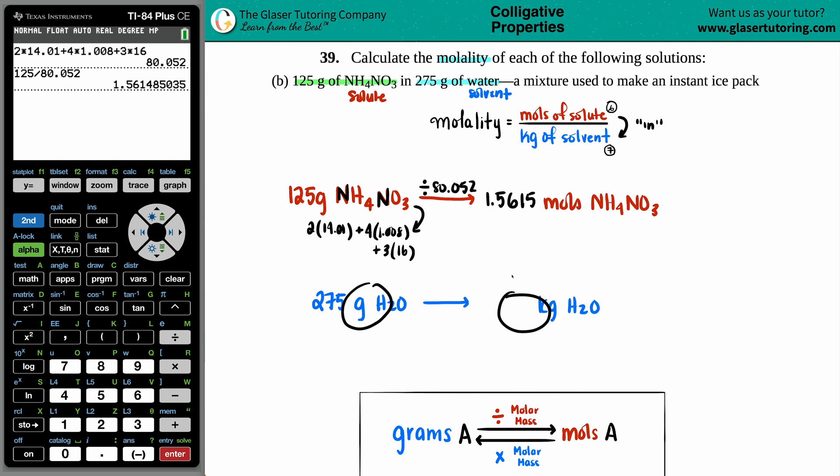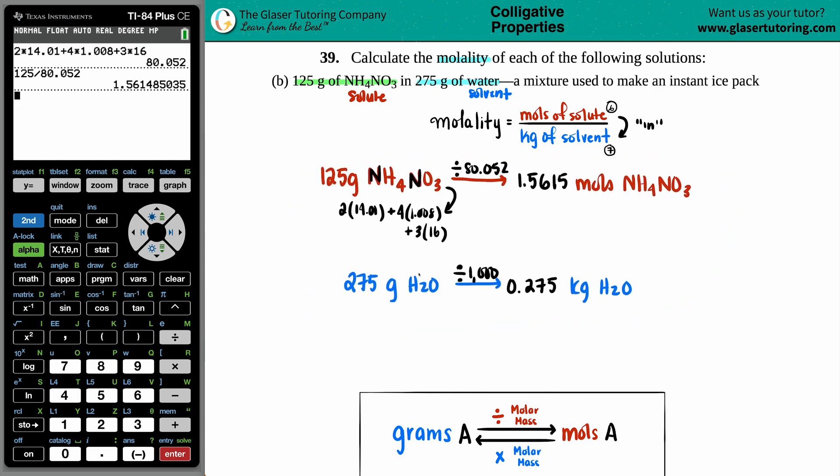Grams to kilograms, SI unit conversion, all we have to do is divide by 1,000. Similarly, you could take the decimal and move it to the left three times. So this would be 0.275. Now, since we have both of these values, we can just easily plug it in into our molality formula.